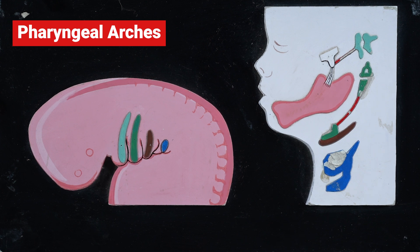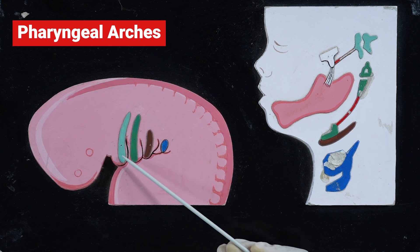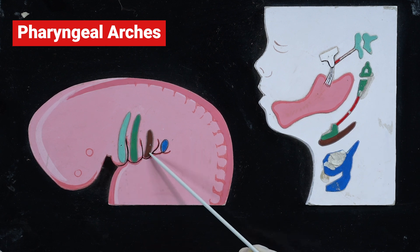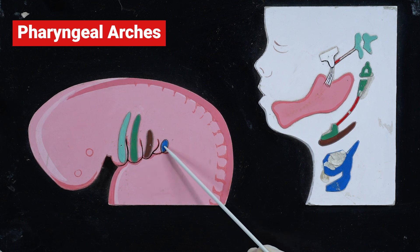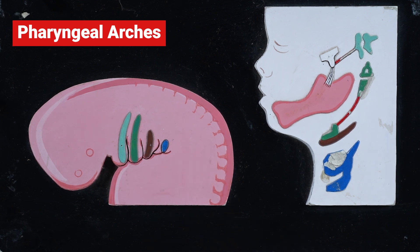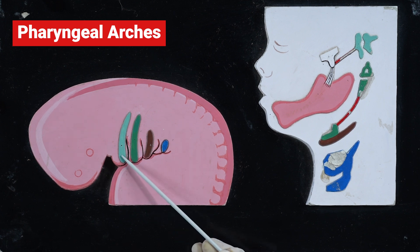Once you have described the muscles, the examiner can ask you about the nerves of each arch. The nerve of the first arch is the mandibular nerve, second is facial, third is glossopharyngeal, fourth is the superior laryngeal branch of vagus, and sixth is the recurrent laryngeal branch of vagus. All these nerves are post-trematic nerves of the respective arches. The pre-trematic nerve of the first arch is represented by the chorda tympani.